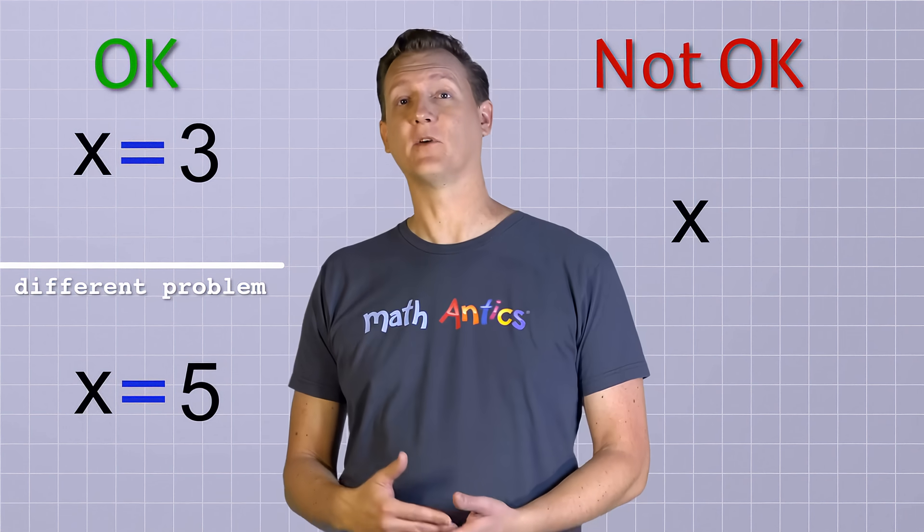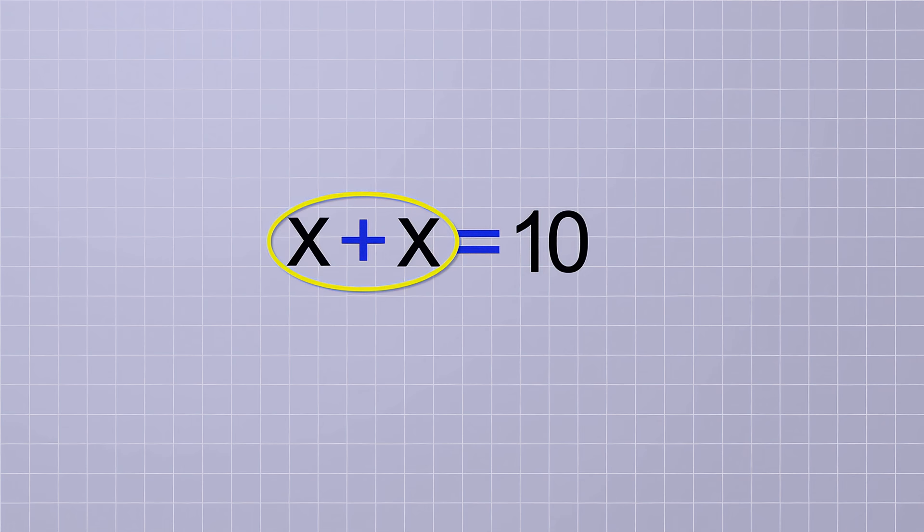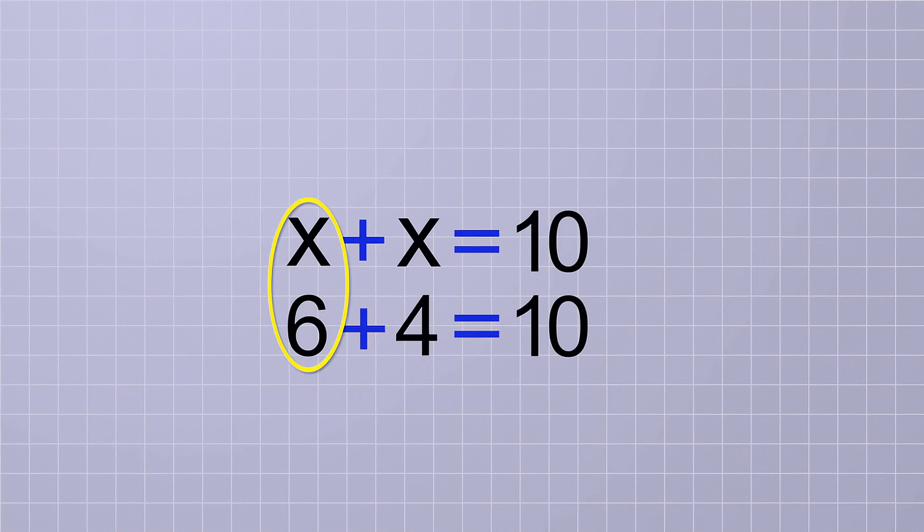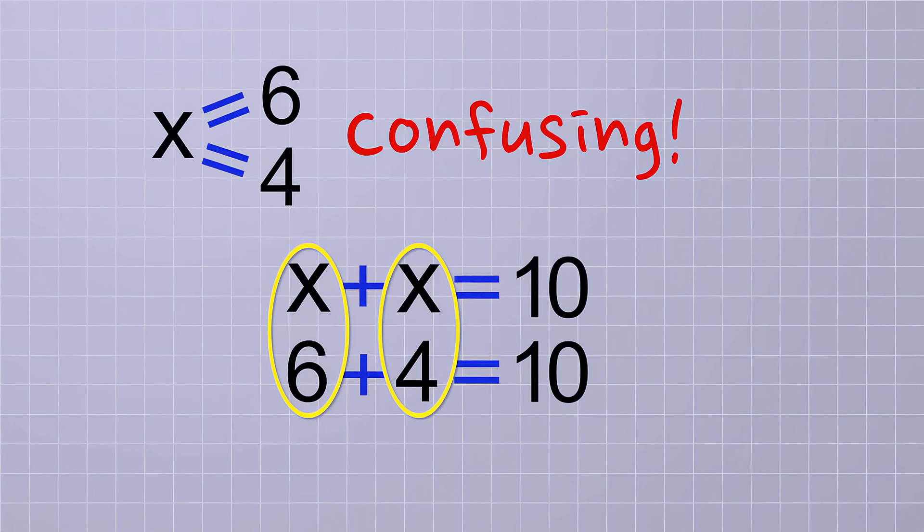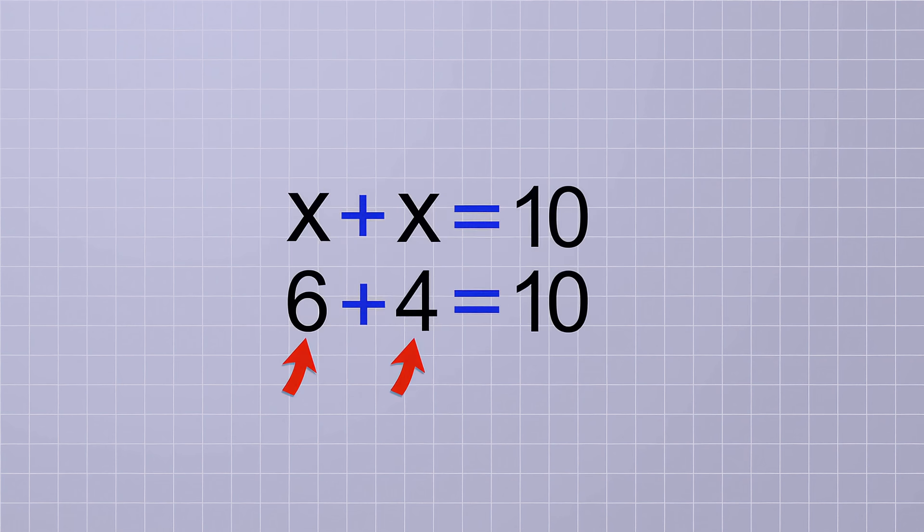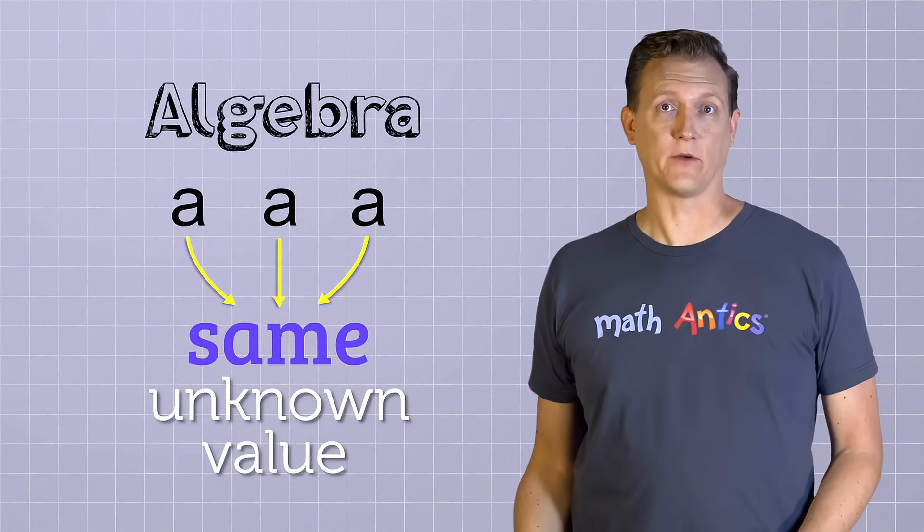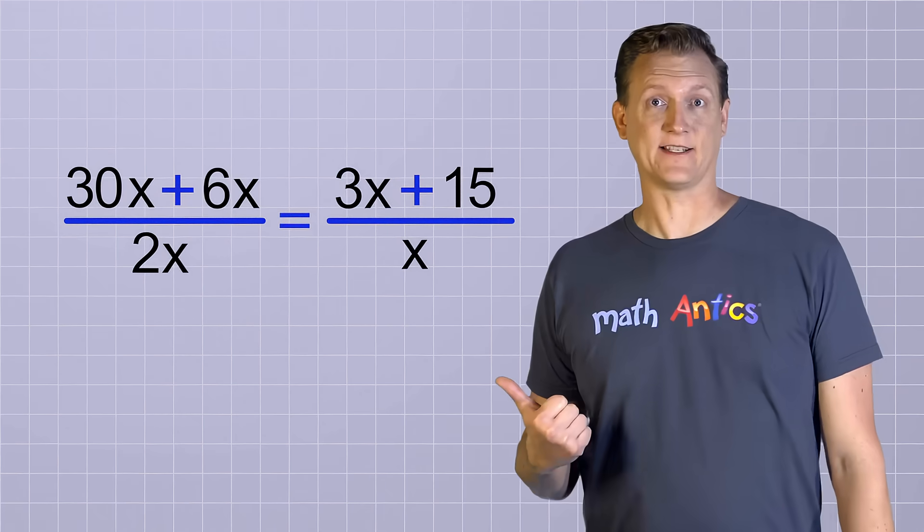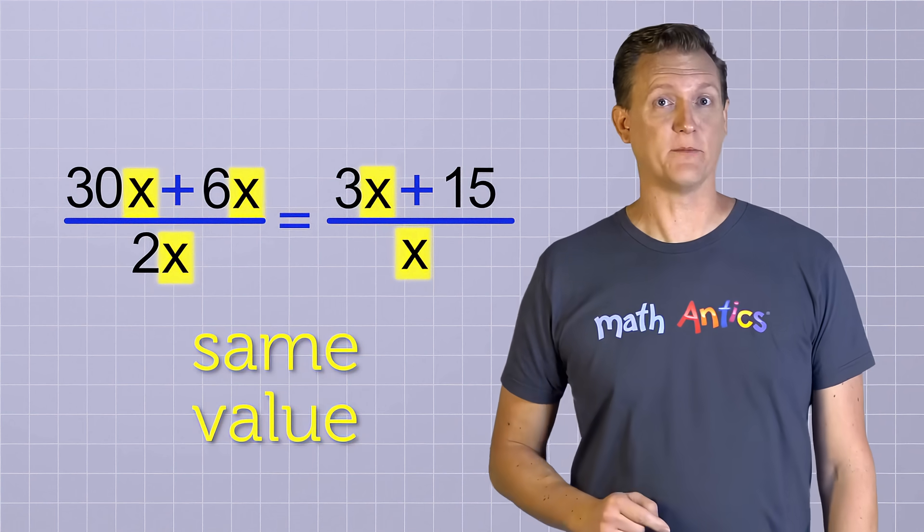But what's not okay is for a symbol to stand for different values in the same problem at the same time. For example, what if you had the equation x plus x equals 10? This equation says that if we add x to x, we'll get 10. And there's a lot of different numbers that we could add together to get 10, like 6 and 4. But if we had the first x stand for 6 and the second x stand for 4, then x would stand for two different values at the same time and things could get really confusing. If you wanted symbols to stand for two different numbers at the same time, you'd need to use two different symbols, like x and y. So in algebra, whenever you see the same symbol repeated more than once in an equation, it's representing the same unknown value. Like if you see a really complicated algebraic equation like this, where x is repeated a lot of different times, all those x's stand for the same value, and it'll be your job to figure out what that value is.